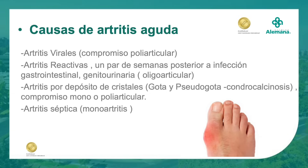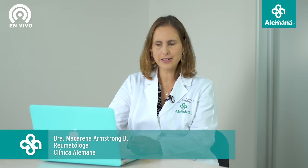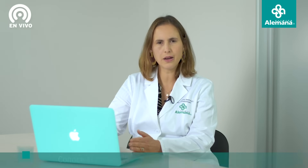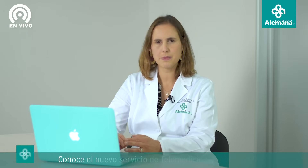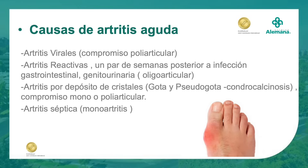Las artritis por depósito de cristales también pueden presentarse de manera aguda. La más conocida es la gota y también existe la pseudogota o condrocalcinosis. Puede comprometer una o muchas articulaciones y generalmente es un cuadro bastante agudo: puede partir de un día para otro con dolor importante, calor local, enrojecimiento de la piel y mucha incapacidad funcional. Las artritis sépticas se manifiestan como una sola articulación con tremendo dolor, aumento de volumen, calor local y eritema. Son de causa bacteriana, constituyen una urgencia en reumatología o traumatología y deben ser tratadas precozmente.